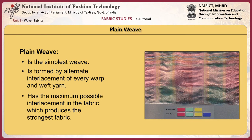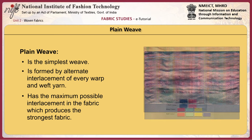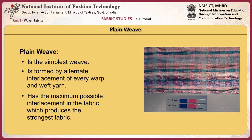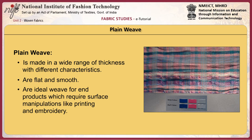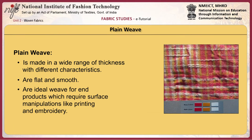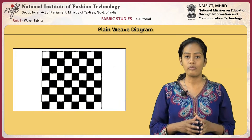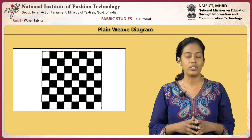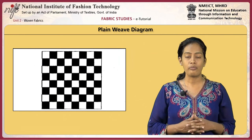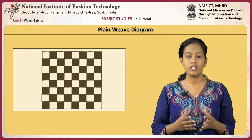Plain weave is the simplest weave, formed by alternate interlacement of every warp and weft yarn. Plain woven fabrics have maximum possible interlacement, thus producing the strongest fabric. It is made in a wide range of thickness with different characteristics. Plain woven fabrics are flat and smooth. Both sides of the fabric look similar, making it an ideal weave for end products requiring surface manipulation like printing and embroidery. Some typical plain woven fabrics are muslin, chiffon and georgette.